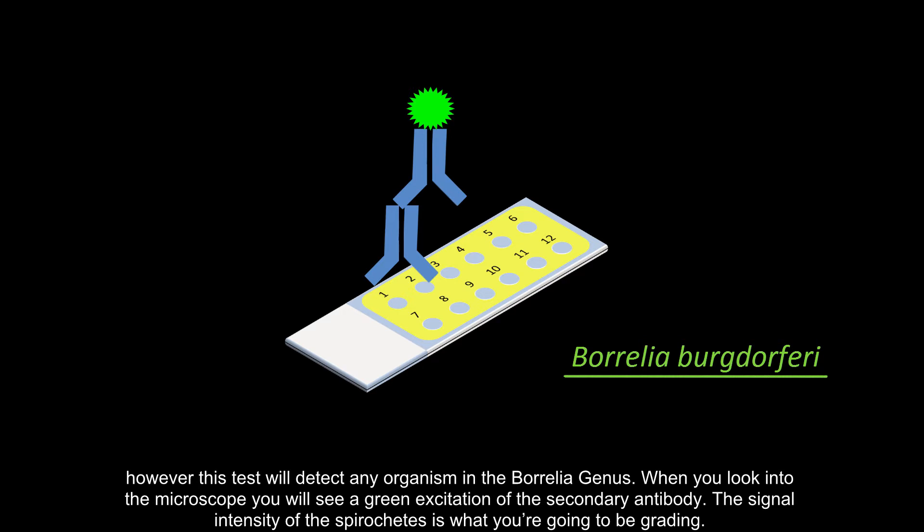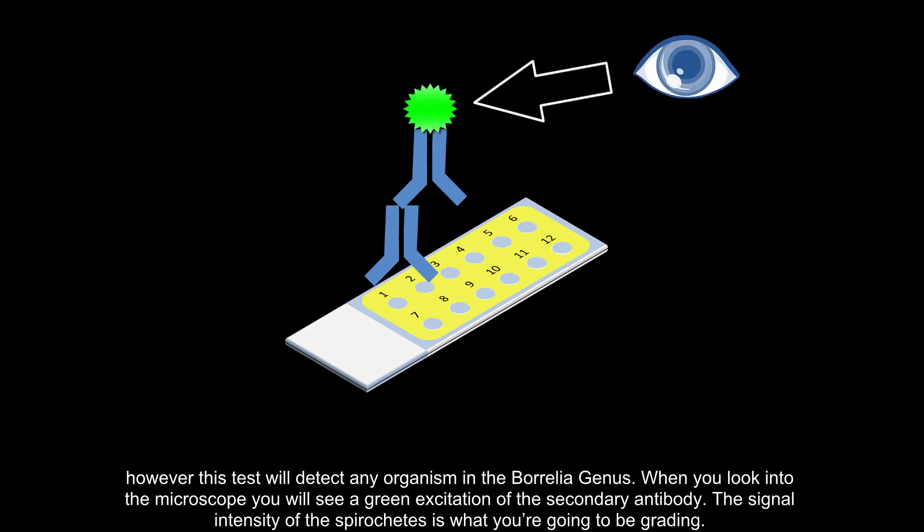However, this test will detect any organism in the Borrelia genus. When you look into the microscope, you will see a green excitation of the secondary antibody. The signal intensity of the spirochetes is what you're going to be grading.